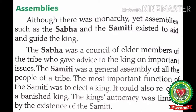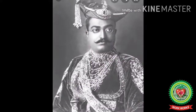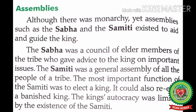Although there was monarchy, assemblies such as the Sabha and the Samiti existed to aid and guide the king. Assembly means meeting; existed means survived. The king was not autocratic — his powers were limited by these two assemblies. The Sabha was a council of elder members of the tribe who gave advice to the king on important issues. The Samiti was the general assembly of all the people of a tribe, and its most important function was to elect a king. It could also re-elect a banished king.